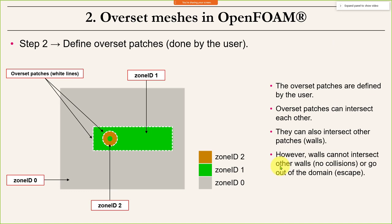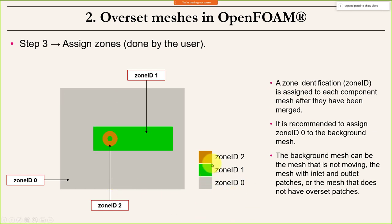After merging the meshes, you define overset patches — these can be defined during mesh generation or afterwards. In these regions, the solution is interpolated. Besides inlet, outlet, wall, front, back, and empty boundaries, you will have overset patches. Then you define the zone ID. Each component mesh gets a different index value — zone 0, 1, and 2 — and the order is important. Zone 0 is typically the background mesh where you have inlets and outlets, and the other meshes get higher numbers. According to these numbers, you assign lower or higher priority.